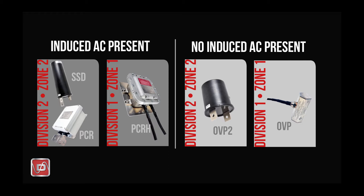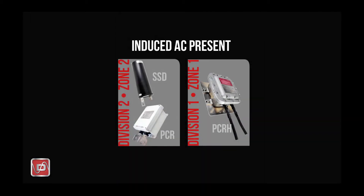In the first set of boxes, we have products that are suitable for use in locations where induced AC voltage is present. The second set contains products for use where AC induction is not present. Breaking them down further, we've grouped these products based on their hazardous location rating. The first grouping shows products able to address steady-state induced AC current. The general rule of thumb is to consider if there is measurable induced AC present now, or if it's likely to be present in the future. If so, choose a product in this first grouping such as the SSD, PCR, or PCRH, all of which are appropriately configured to handle steady-state AC.